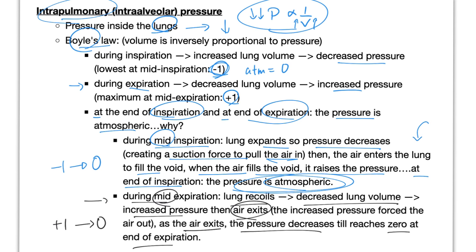So, before you breathe in or out, if you're at atmospheric, you're at 0. You breathe in — negative 1. But at the end of inspiration — 0. Then you breathe out — positive 1 at mid-expiration. At the end of expiration — 0.